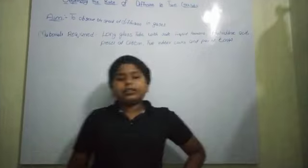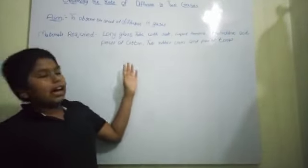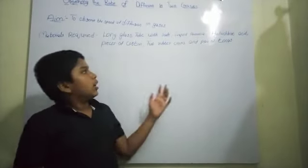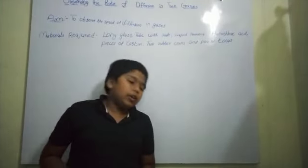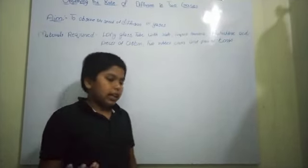The materials required to do this experiment are long glass tube with scale, liquid ammonia, hydrochloric acid, some pieces of cotton, two rubber corks and a pair of tongs. Now take a glass tube.